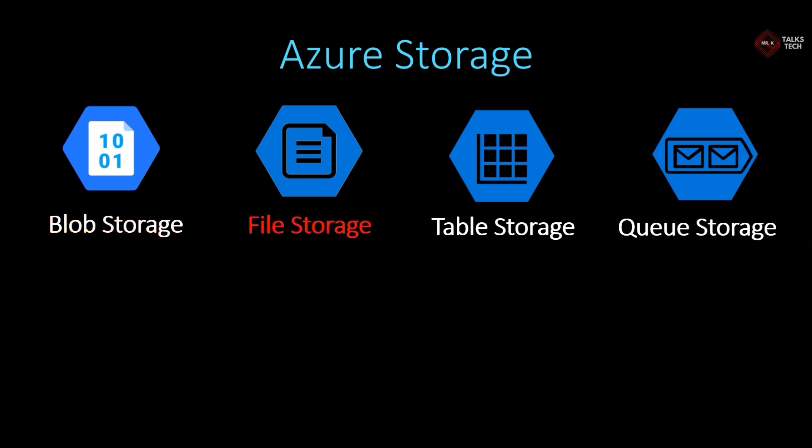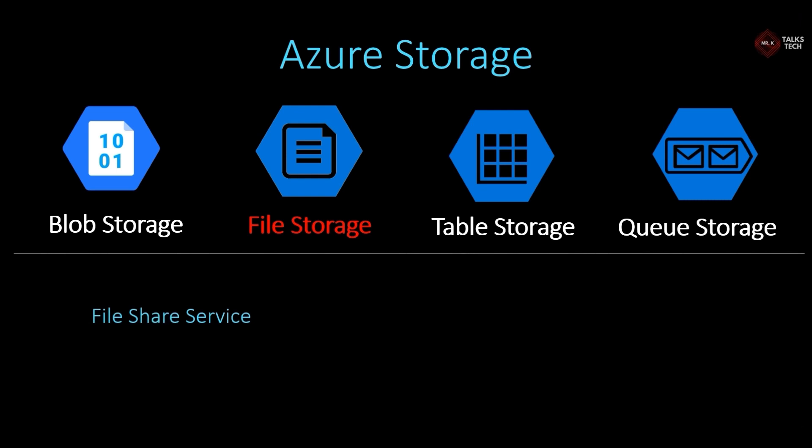The next storage type is file storage. It is a file sharing service — think of it like a normal SFTP server. It can be accessed from anywhere using a URL once created. It also supports hybrid file sharing, meaning this file storage can be used both on-premise and in the cloud. For example, you can mount it on your laptop just like how you use C or D drives.